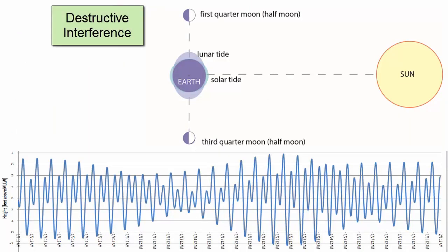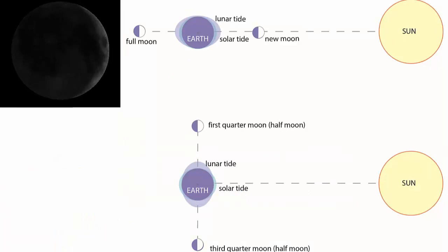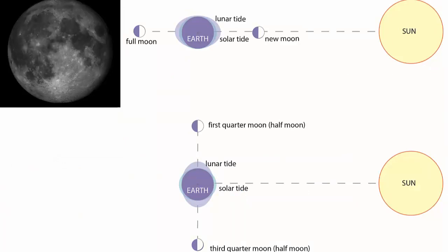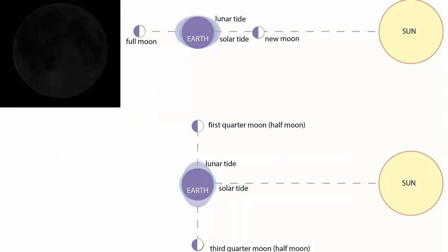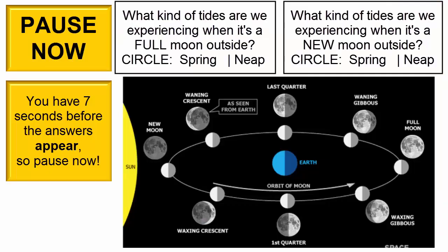When the two bulges are out of phase, which happens when we see half moons, the interference is destructive and the tidal range is at its lowest. The lows aren't so low, the highs aren't so high, neap tides. Turns out we can walk outside at night, look up into the night sky, and based on the phase of the Moon, determine whether we're experiencing neap or spring tides.